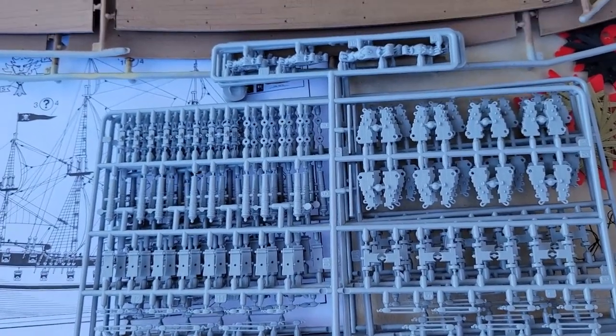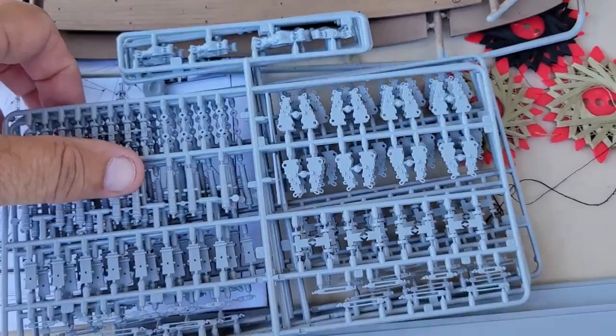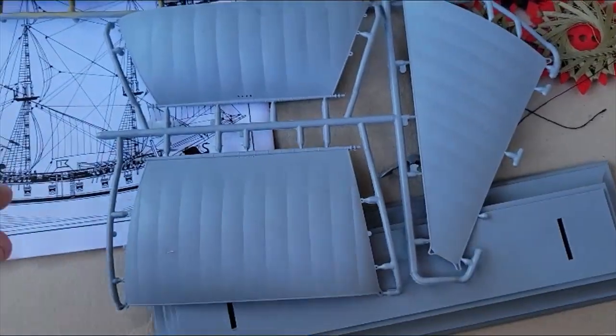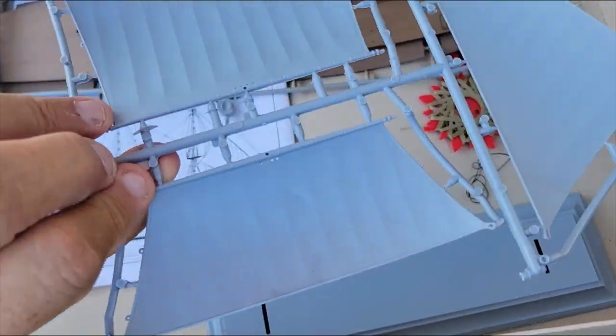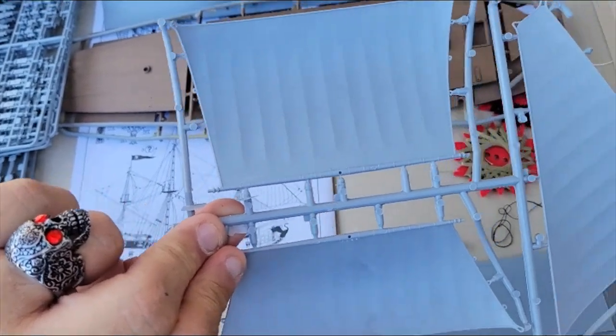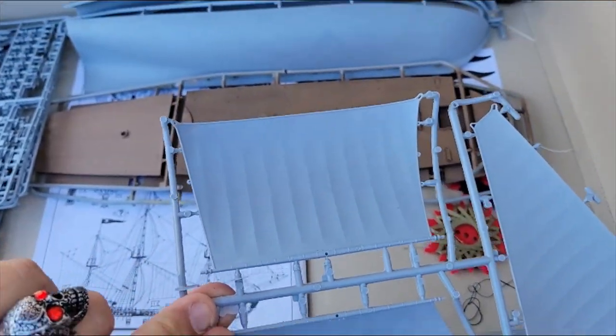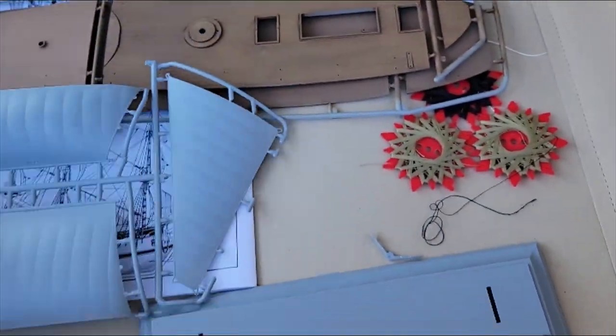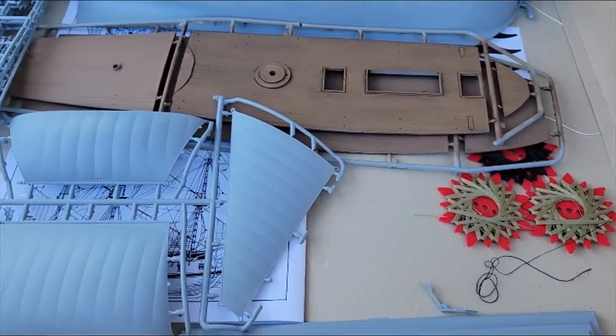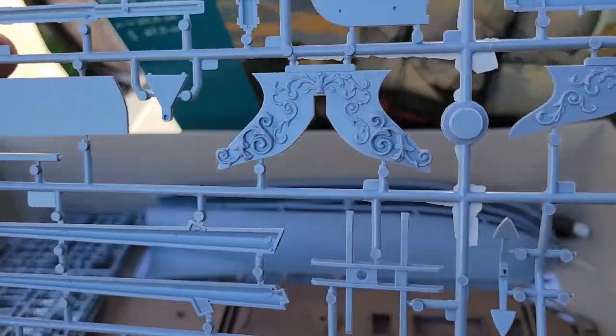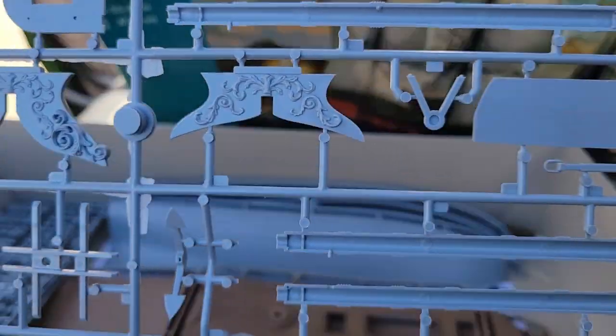Of course they have the cannons as well. I think they're supposed to be a 12-pound cannon, I believe, again in 1/72 scale. And here we've got some of the sails and they're not the blown, whatever you call it, vacuum formed. These are actual injection molded plastic and they look great.